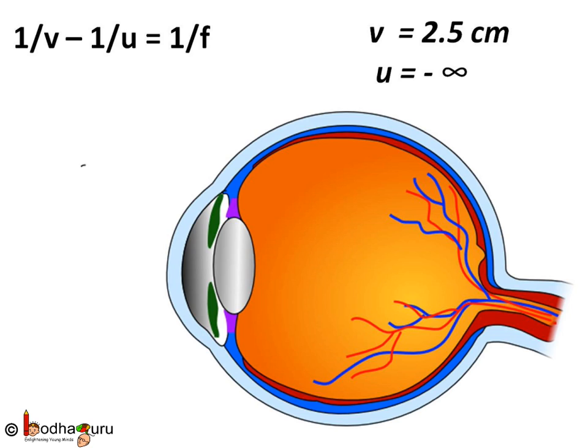The formula for the lens is 1/v - 1/u = 1/f, where v is the image distance, u is the object distance and f is the focal length of the lens. In case of eyes, as the image is formed on retina and the distance between the lens and retina is 2.5 cm, we say v is equal to 2.5 cm.